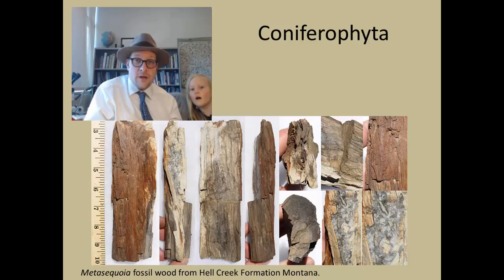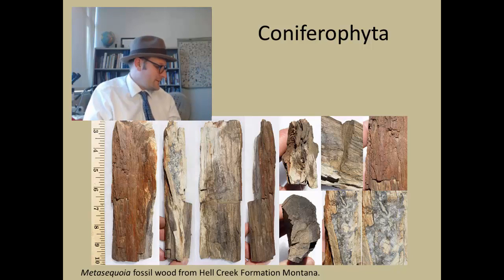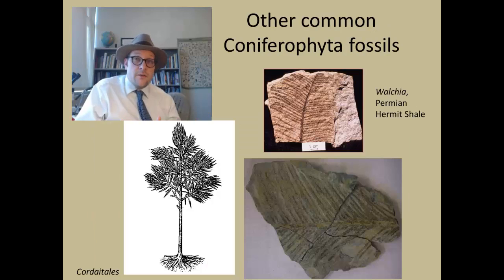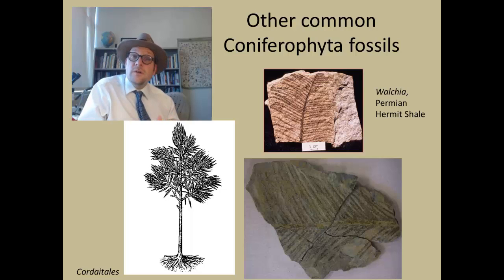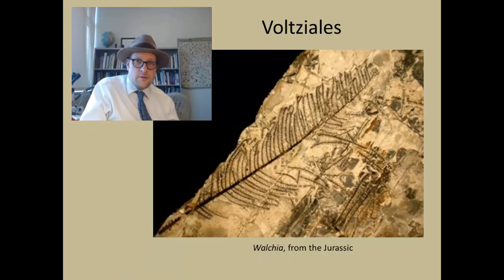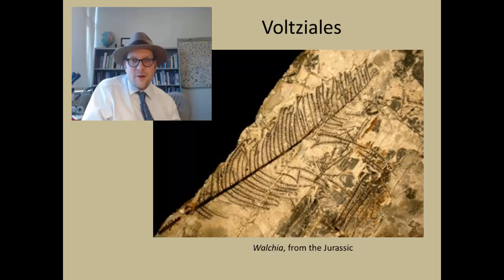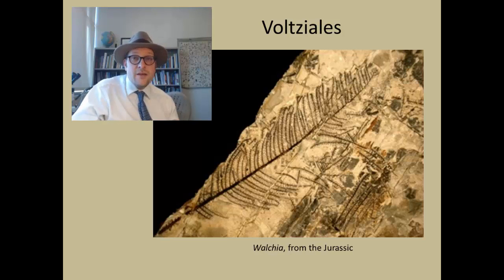In the Late Cretaceous Hell Creek Formation in Montana, fossil wood of Metasequoia is common. Fossil conifers are not confined to the Mesozoic — they have a fossil record extending back into the Late Paleozoic. One fossil found in the Permian is Walchia. Conifers appear to originate from a group of tree-like plants called the Cordaitales during the Pennsylvanian, which shows trends toward multi-seed cones rather than the single seeds seen in cycads. Walchia extends back into the Pennsylvanian with fossils along the coast of eastern Canada, and belongs to the fossil conifer group Voltiziales, which appear near the root of all modern conifers. The genus extends into the Jurassic, making it a survivor of the Permian-Triassic extinction.